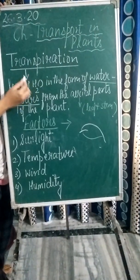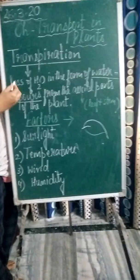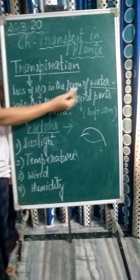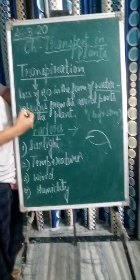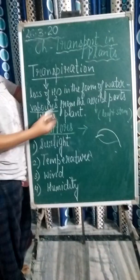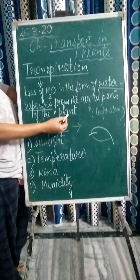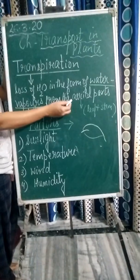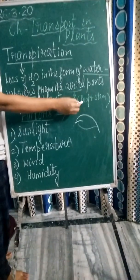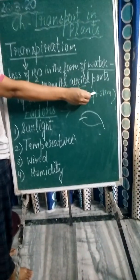So what is transpiration? Transpiration is the loss of water in the form of water vapors from the aerial parts of the plant. Aerial means it includes leaf and stem.